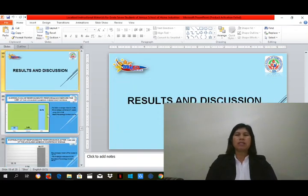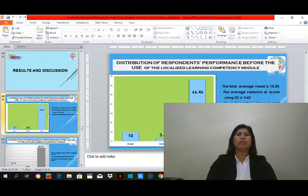For the results and discussion, this is the distribution of respondents' performance before the use of the localized learning competency module. The total average mean is 10, the average variance of scores using SD or standard deviation is 3.42, and the mean percentage score is 66.46.